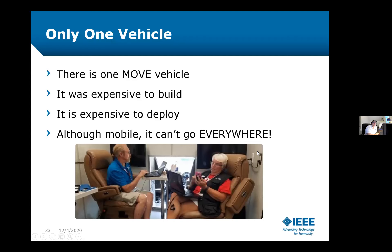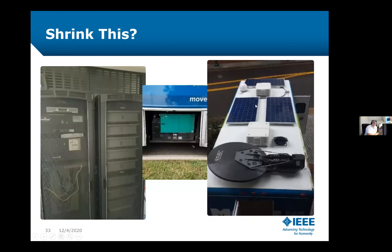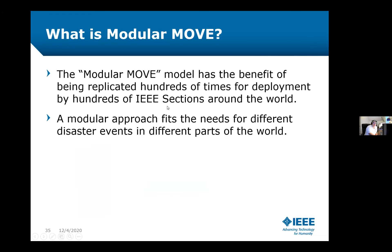There is only one of these vehicles. It costs $250,000 US to build, making it expensive to build, deploy, and it can't go everywhere. So we started looking at how to shrink the communications racks, generator, and solar equipment down into something smaller — a project called Modular MOVE, designed to be deployed worldwide and configured for the particular power standards and capabilities of each region.